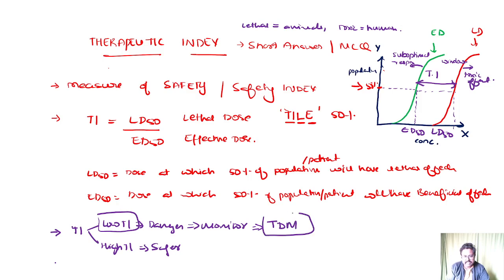TDM is called therapeutic drug monitoring. What are the examples of drugs having low therapeutic index? You can name phenytoin, lithium, tricyclic antidepressants, etc. All these are the drugs which are having low therapeutic index. You should be very, very careful.